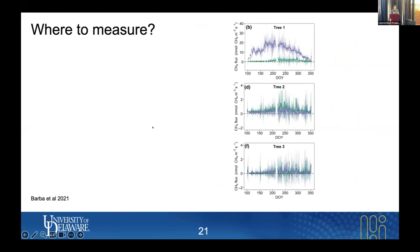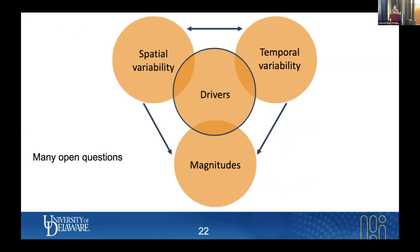When you combine these with automated measurements it becomes even more complicated. We have an example of three trees throughout a year, and the temporal patterns are not even similar between trees. So the problem of manual versus automated measurements is even larger when it comes to modeling and upscaling these fluxes.